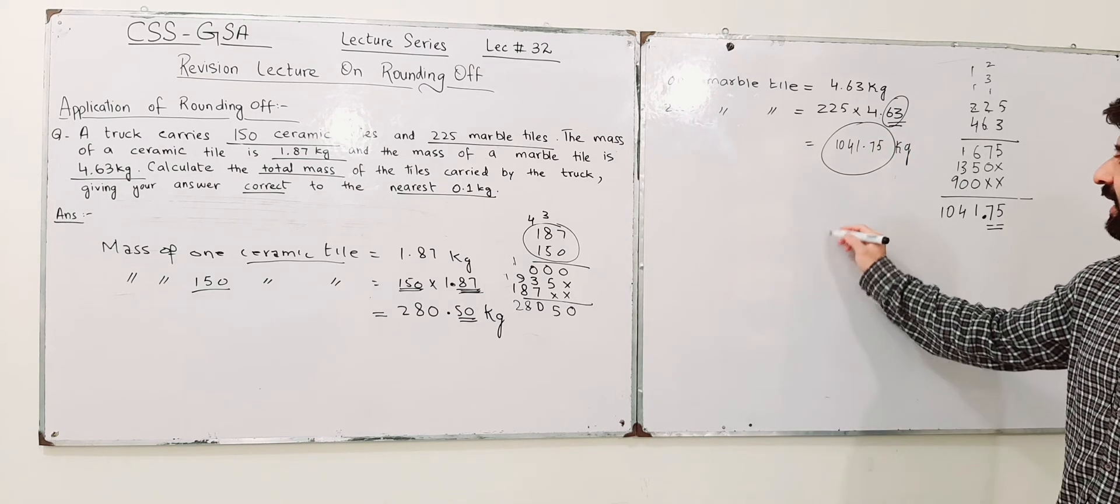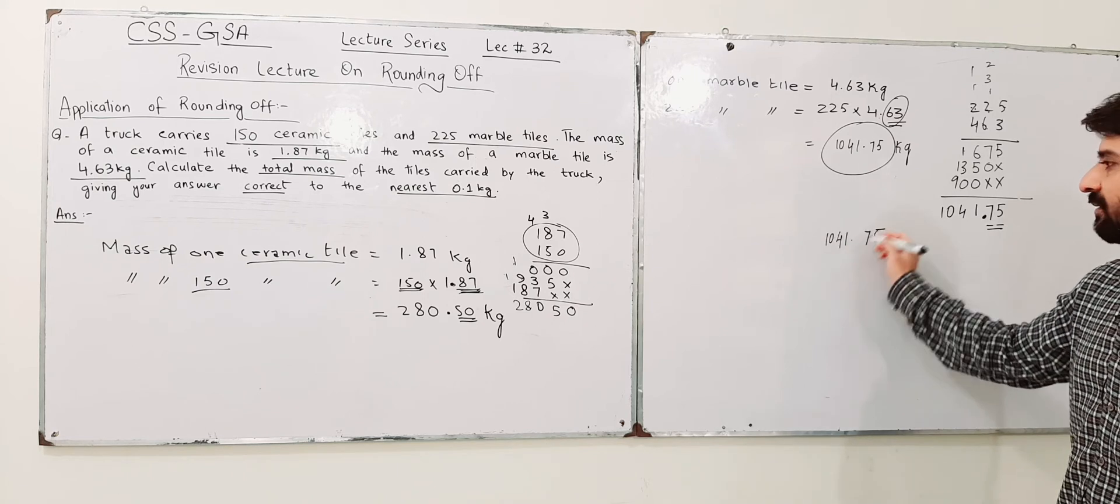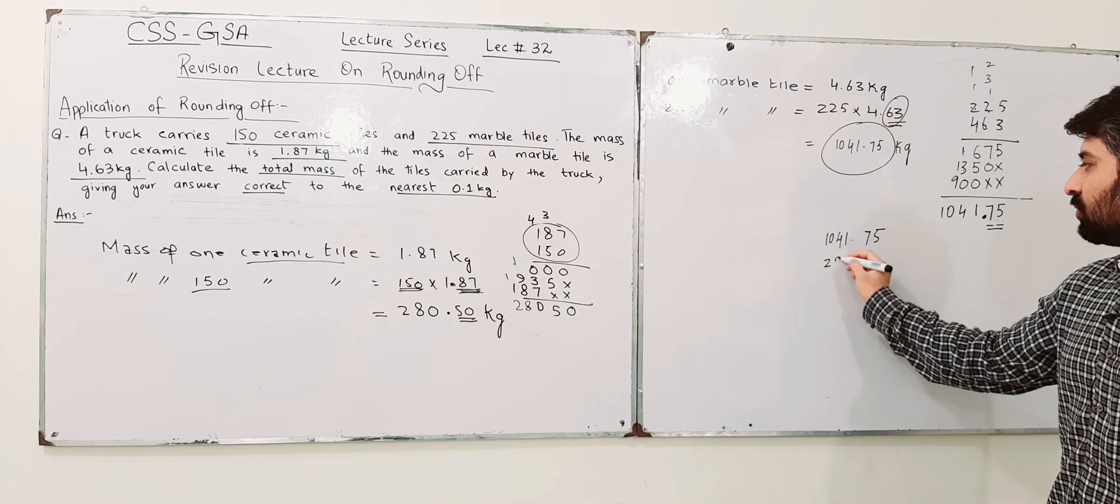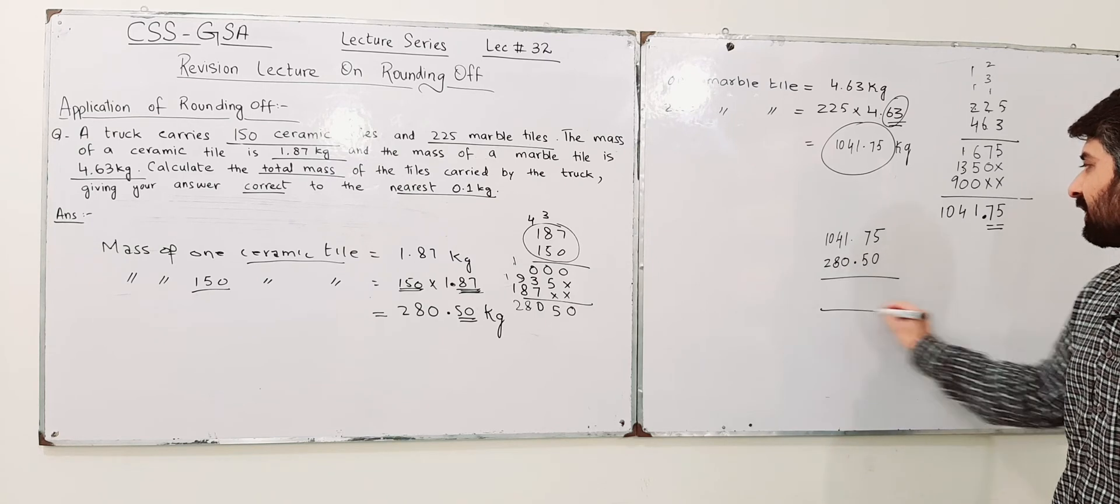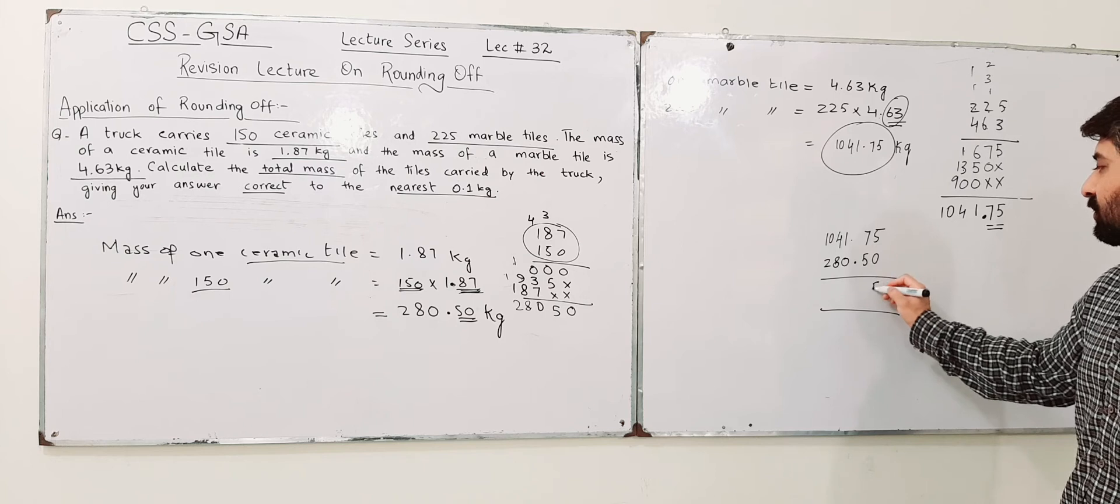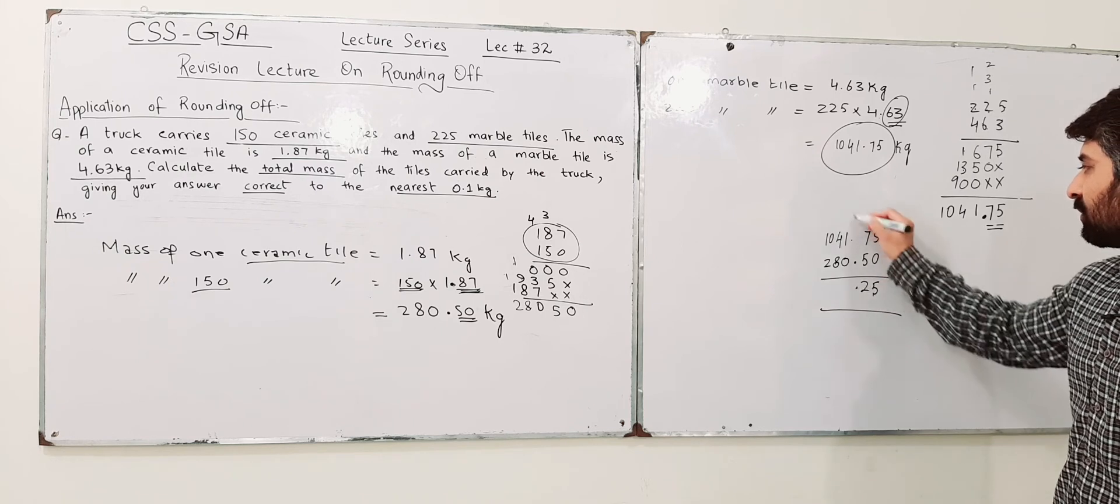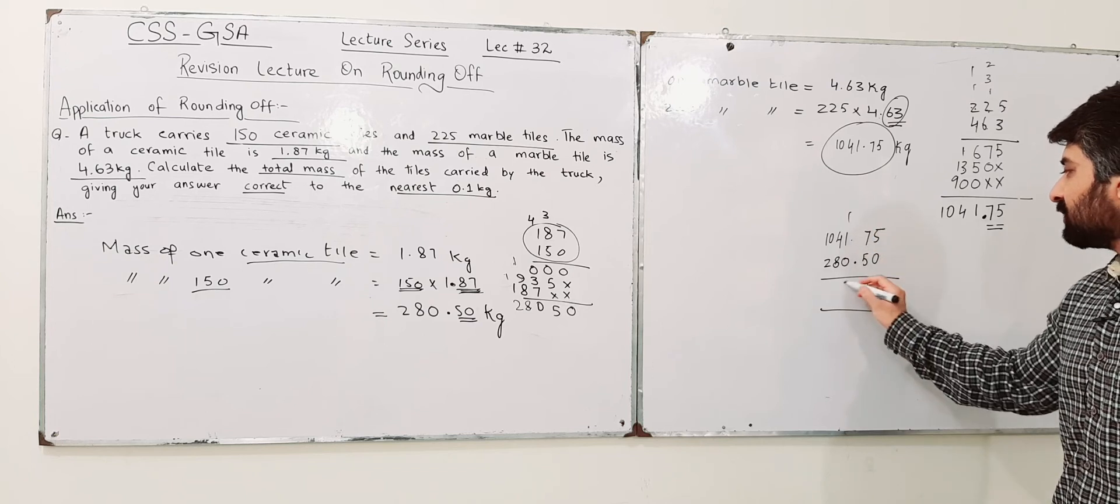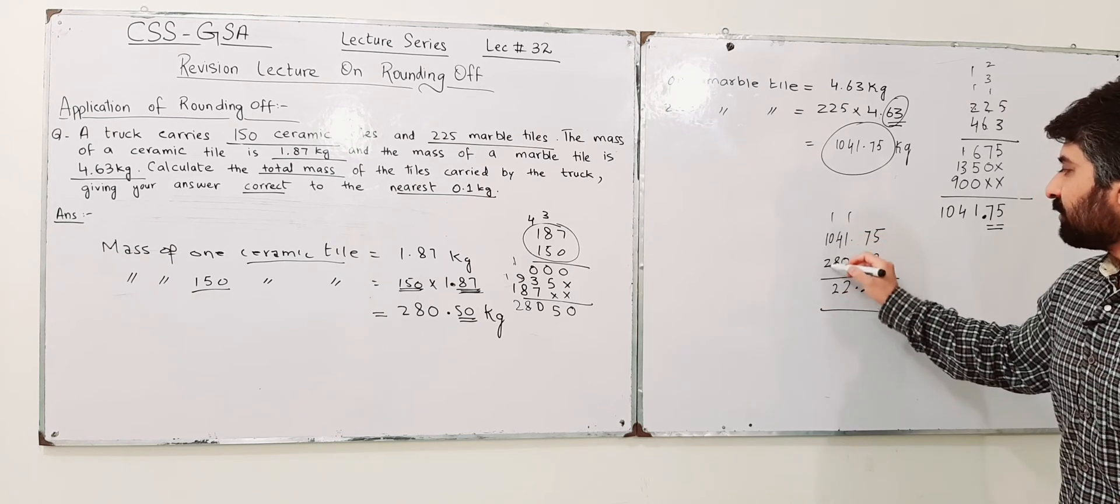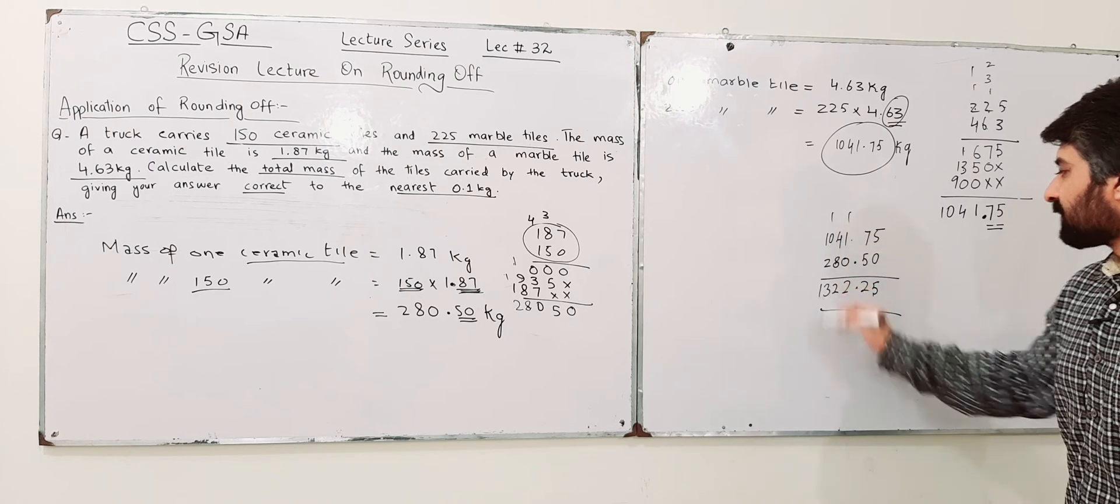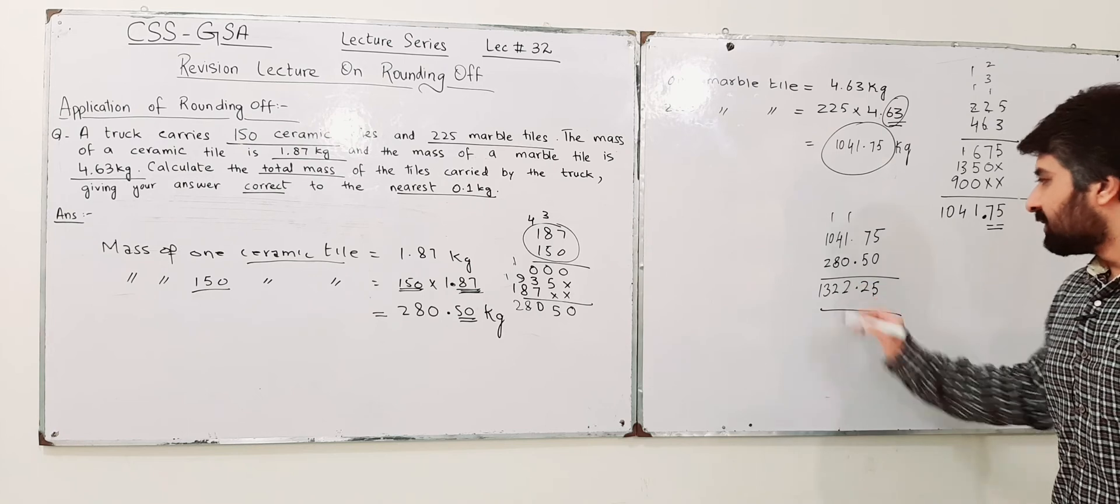Now these are the mass of marble tiles. Here you have calculated the mass of ceramic tiles. Add both of them: 1041.75 and 280.50. Add: 5 plus 0 is 5, 7 plus 5 is 12, 1 carry over here, 1 plus 1 is 2, 4 plus 8 is 12, 0 plus 2 is 2, and 1 is 3. This is 1322.25.